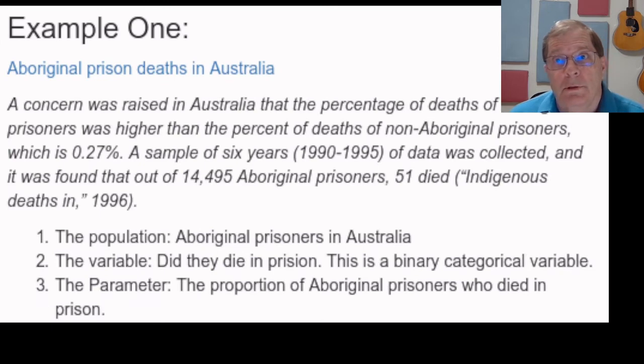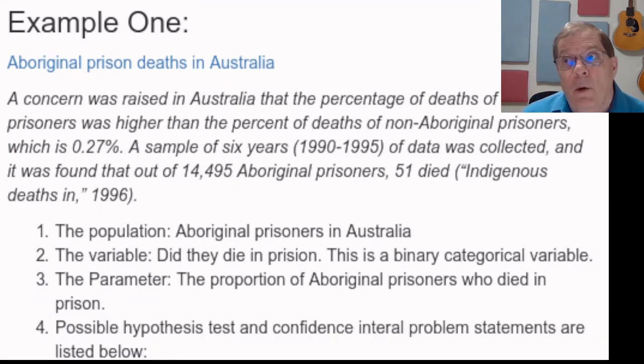The parameter is the proportion of the Aboriginal prisoners who died in prison. Now, from what we've read, we can't tell whether we were supposed to do a hypothesis test or whether we were supposed to do a confidence interval.